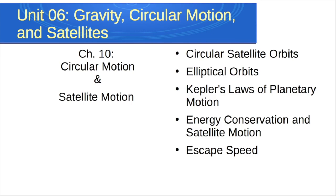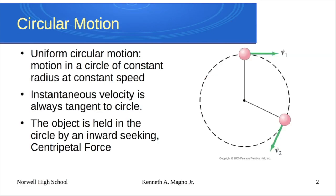We might talk a little bit about energy and escape speed as we go. Circular motion is this idea of motion in a circle at constant speed and constant radius. Our velocity is going to be tangent to the circle, and the object is going to be held in a circle by an inward-seeking centripetal force.